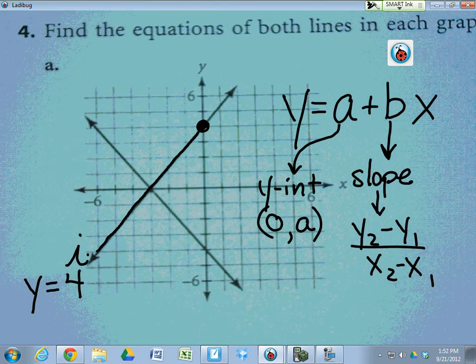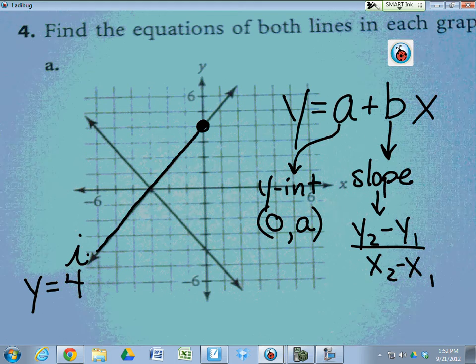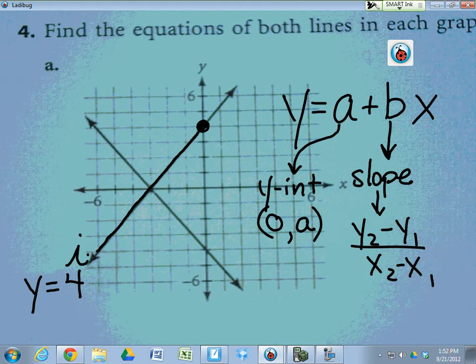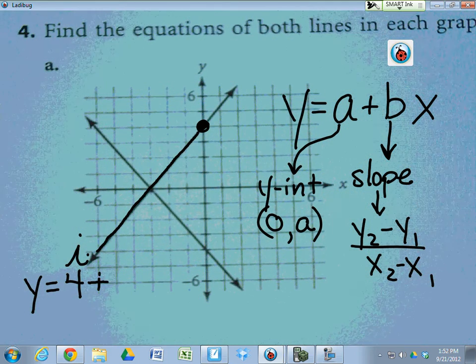It's either four plus BX or four minus BX. As I was tracing that line in black, was I going uphill or downhill? Uphill. So that's definitely plus.